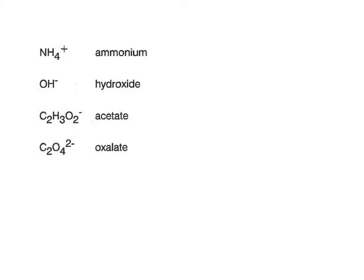Next we have hydroxide. The only reason this one's a little confusing is people tend to write hydrogen then oxygen, but the formula is O then H, with a negative one charge — that's the standard form. The whole thing has a negative one charge, so you need to memorize both the formula and the charge. Next we have acetate, which isn't particularly hard but is easily confused with oxalate — people like to mix those two up.